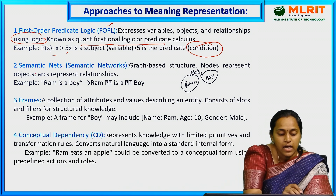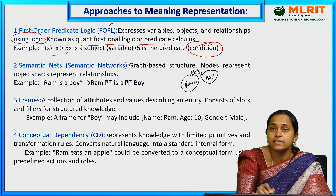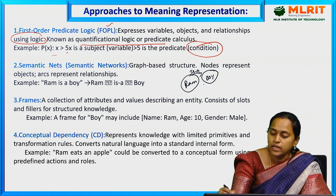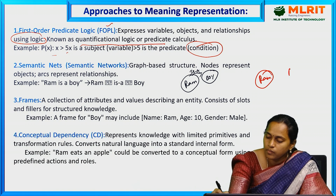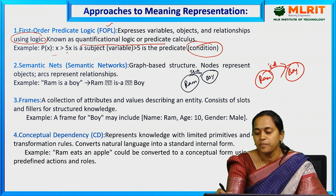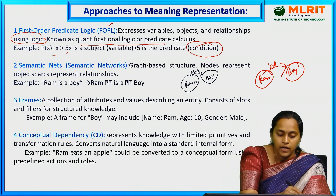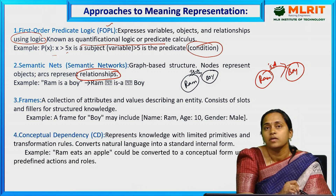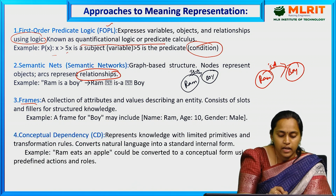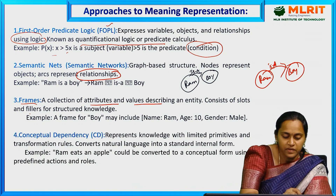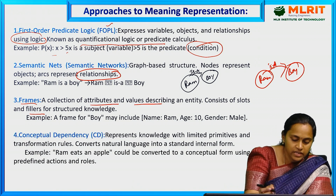Next, semantic nets, or semantic networks — these are graph structures. For example, 'Ram is a boy' — Ram and boy are nodes, and 'is a' is the arc representing the relationship between them.